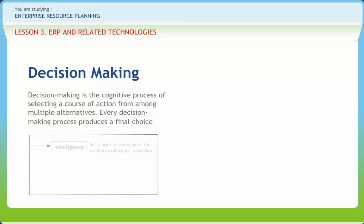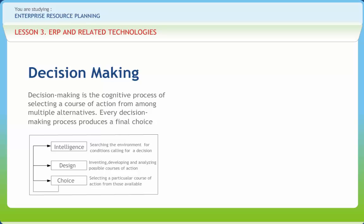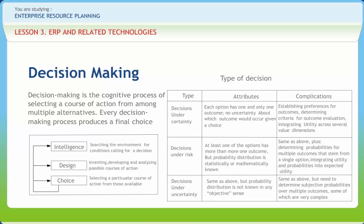In the intelligence phase: gather data, identify objectives, diagnose problems, validate data, and structure the problem. In the design phase: gather data, manipulate data, quantify objectives, generate reports, generate alternatives, and assign risks or values to alternatives. In the choice phase: generate statistics or alternatives, simulate results of alternatives, explain alternatives, choose among alternatives, and explain choice.